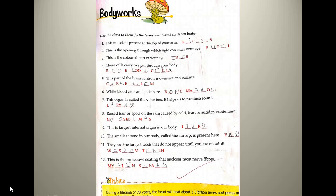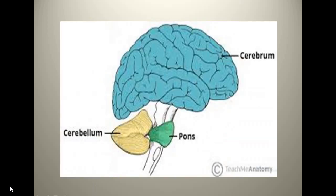Next is: this part of the brain controls movement and balance. The brain is divided into different parts, each with different roles. The brain is mainly divided into three parts: cerebrum, cerebellum, and pons. The part which controls movement and balance is cerebellum.